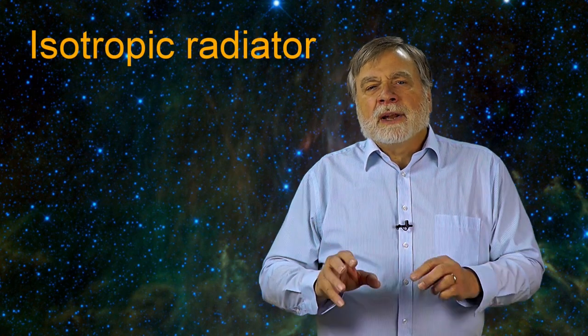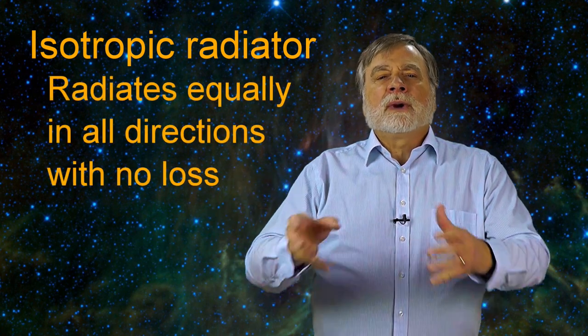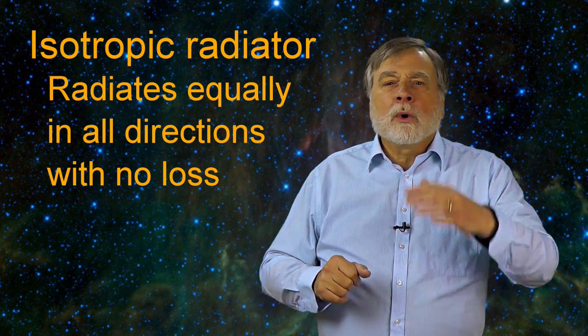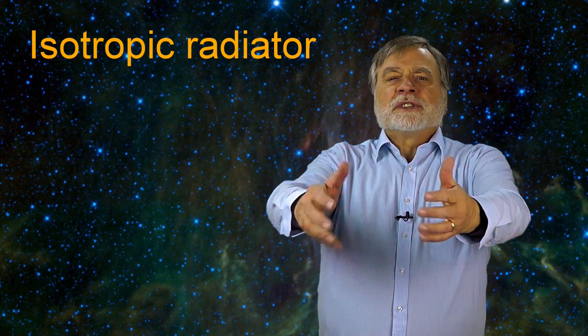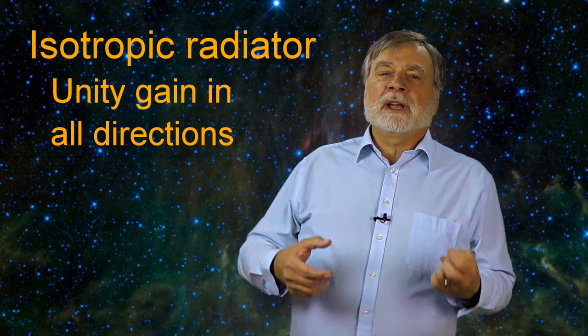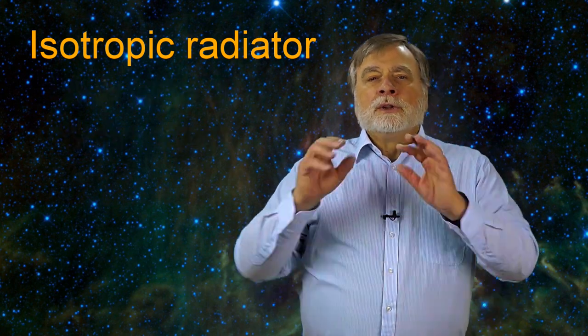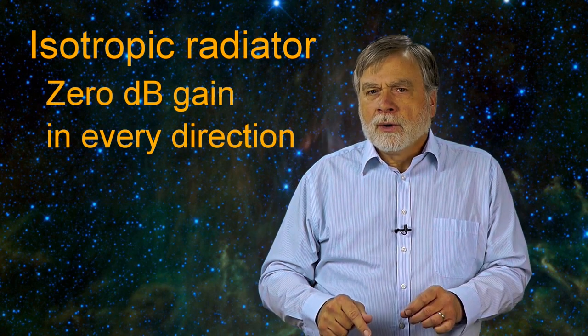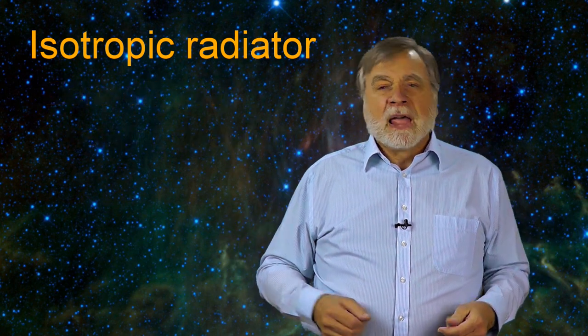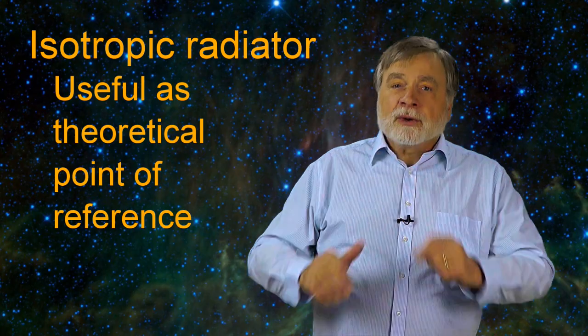Now, the isotropic radiator I just mentioned is a theoretical antenna that radiates equally in all directions without any losses. If 100 watts goes in, 100 watts of RF comes out. Since there's no gain or loss and the pattern is uniform, we say that the isotropic radiator has unity gain, meaning a gain factor of 1 in every direction. Note that the log of 1 is 0, so in dB terms it has a gain of 0 dB in every direction. Now, there is no such physical antenna, but it can be handy as a point of reference.